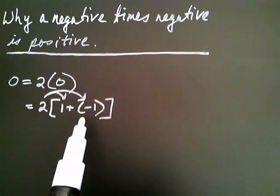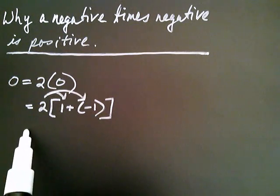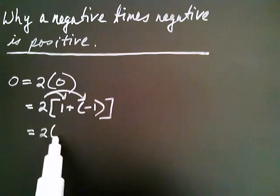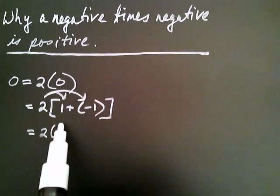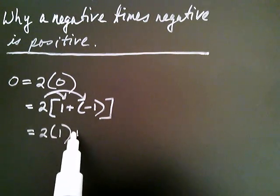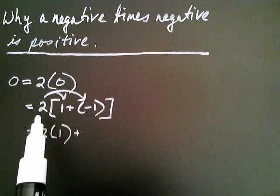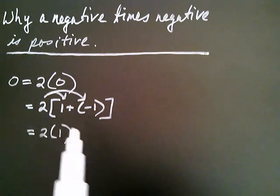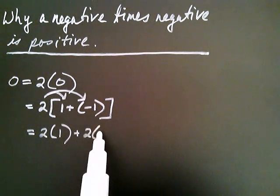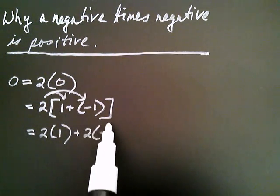This is equal to two multiplied by one, plus — when I distribute the two — I get two times negative one.